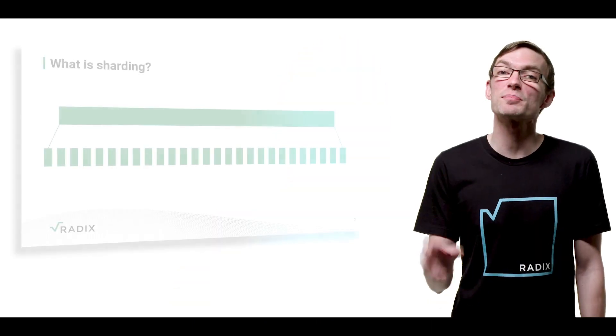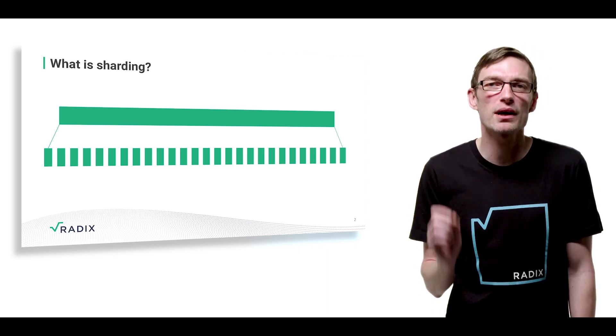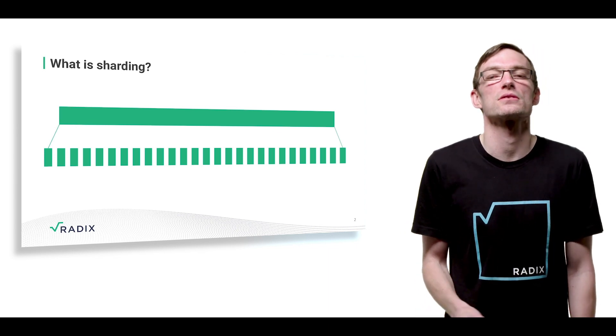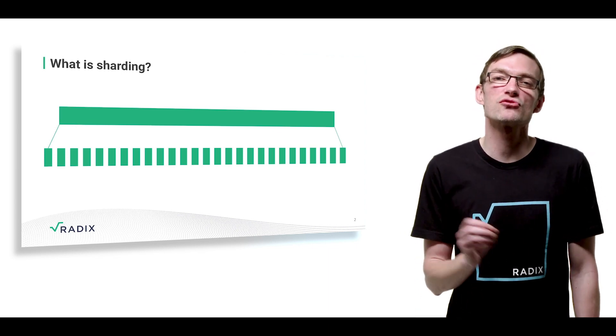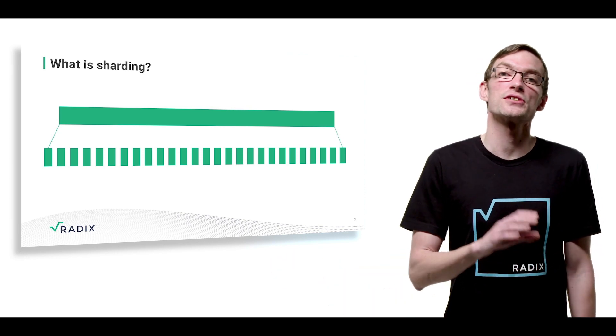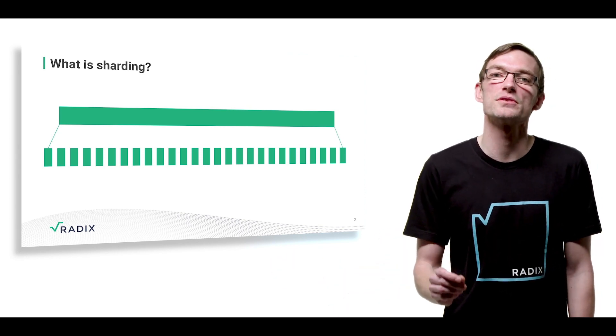In this video we're going to discuss the Radix data architecture and how Radix is sharded to achieve true scalability. Sharding is when you split up a single data source into smaller more manageable chunks. Those shards of data can then be distributed across multiple servers to spread the load and maintain high performance.